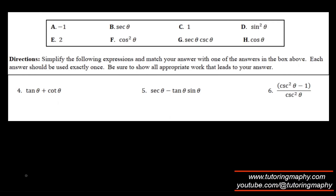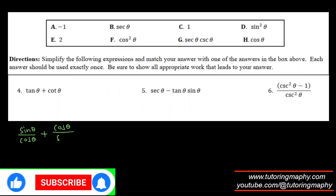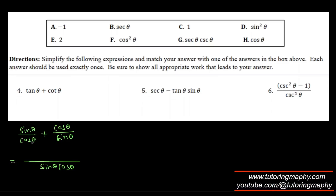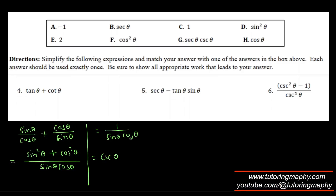For question 4, tanθ + cotθ: replace tanθ with sinθ/cosθ and cotθ with cosθ/sinθ using quotient identities. Taking the common denominator sinθ·cosθ, the numerator becomes sin²θ + cos²θ = 1. So we get 1/(sinθ·cosθ), which equals cscθ·secθ — that's option G.